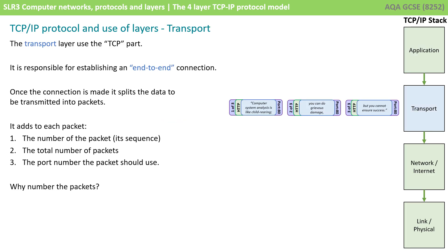We then pass this down to the transport layer, which uses the TCP part of the protocol. It's responsible for establishing an end-to-end connection. Once the connection is made, it splits the data to be transmitted into packets. For this example we'll split our message, though typically a data transmission would be much larger. We need to add to each packet the packet number, for example packet 1 of 3, and also a port number. This additional data is wrapped around the original data — think of it like a parcel — with this extra information wrapped around the data that was already wrapped by the application layer.